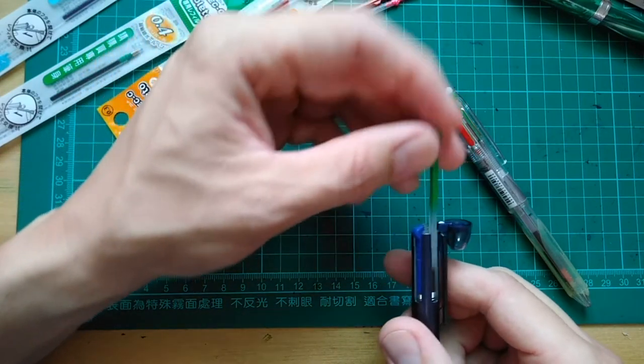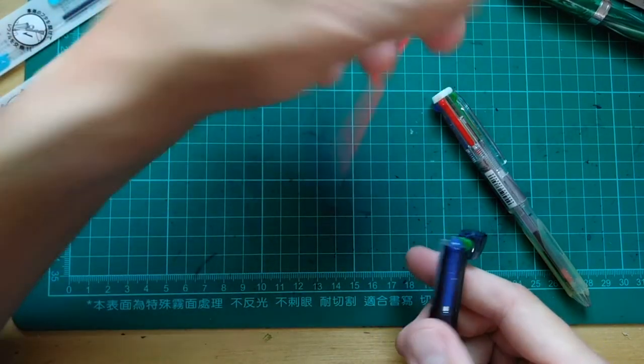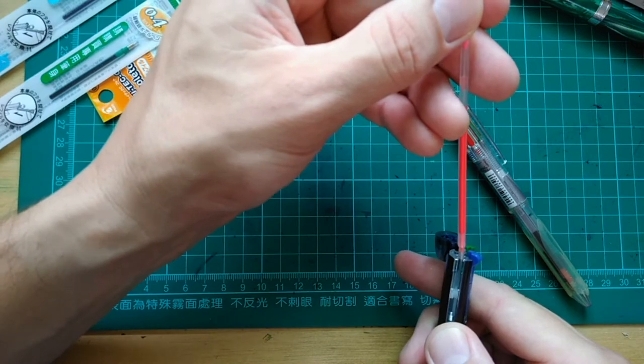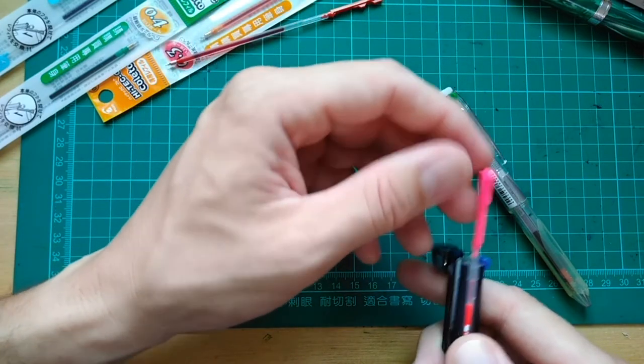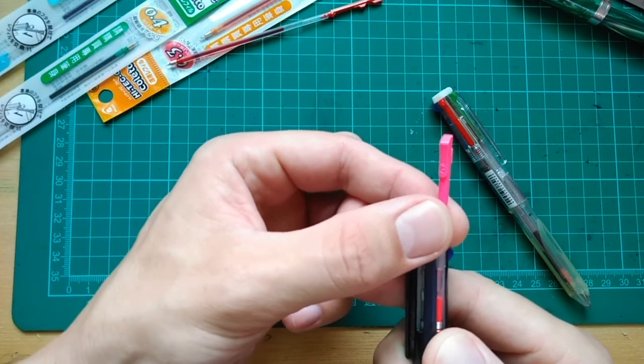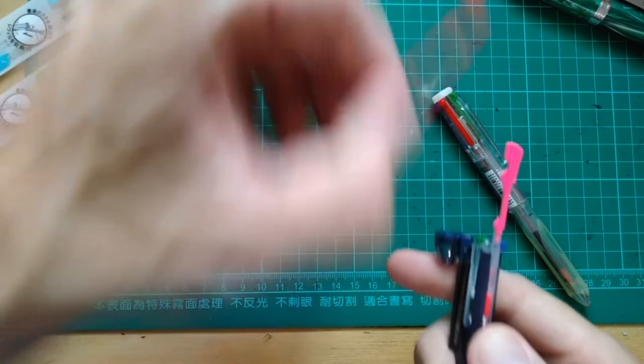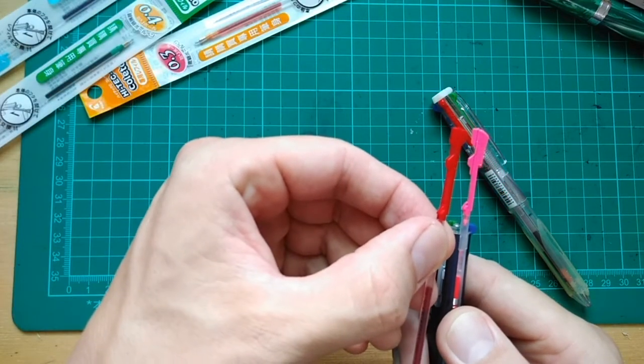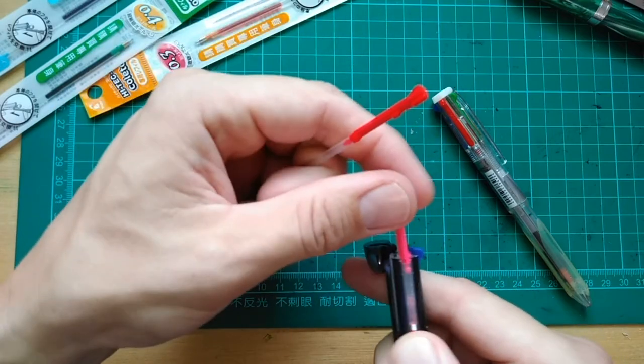When all of your refills are inserted, they are nicely color-coded and easy to see. This one has a different shape, because it's a special neon color series of inks. There is also a metallic ink series, and a series of pastel colors.